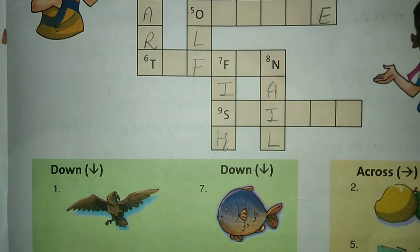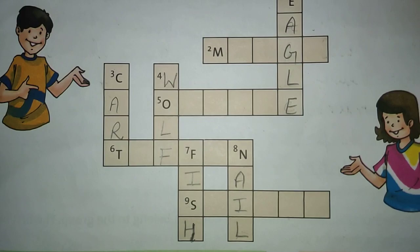And across, number two — mango. What is this? This is a mango. M, A, N, G, O. Mango.